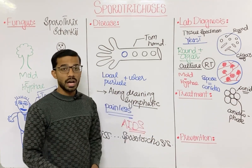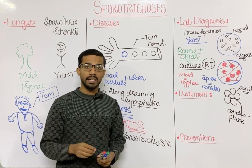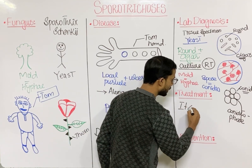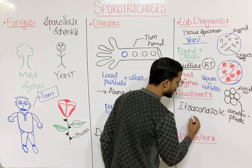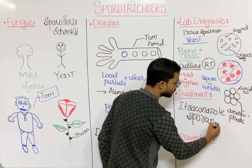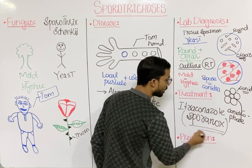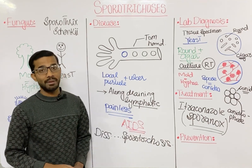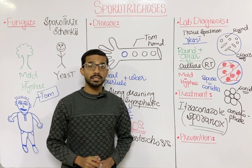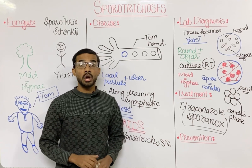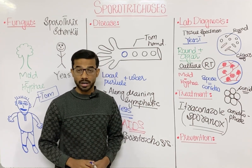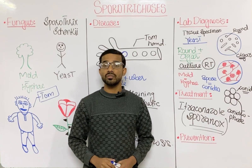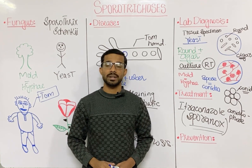For treatment, local lesions are treated with itraconazole (also known as Sporanox), which is the drug of choice for sporotrichosis. For prevention, gardeners must be careful when touching flowers and plants, since the mold form exists on plants. If you have any questions, please ask in the comment section.